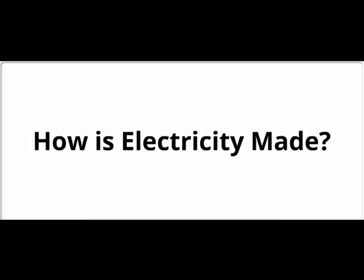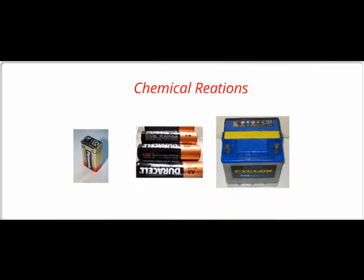So let's talk about how electricity is made. There are several ways that electricity is made. One is through chemical reactions. You have different metals and chemicals that you bring together, and they'll generate a voltage.